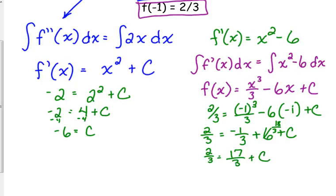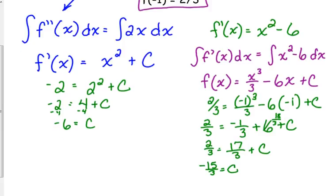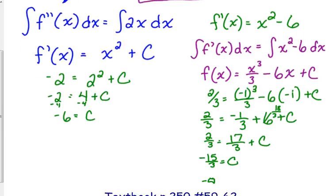We'll move that to the other side. 2 minus 17 is negative 15. Well, what's negative 15 over 3? Negative 5. Negative 5 is C.